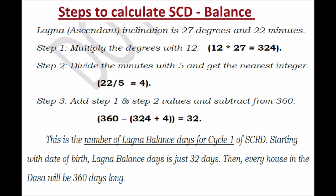In Vimshottari Dasa, we have the balance period at the time of birth. In the same way, here in Sudarshan Chakra Dasa also, you have this Lagna balance. So you start with the date and then add 32 days to the date of birth. That will complete the first house in the first cycle. For every house, add 360 days, which is equal to 1 year. So for the first cycle, the second house will begin 32 days after the date of birth of Indira Gandhi.